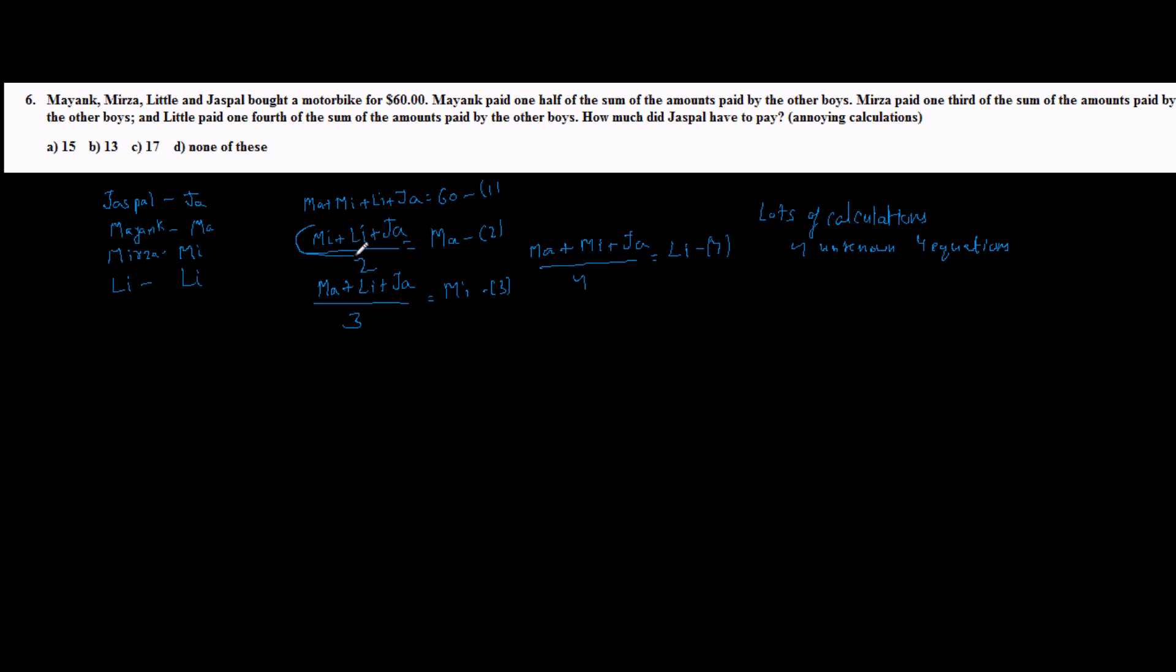So here if you look for a pattern, we find that MI plus LI plus JA is equal to 2MA. So in first equation we can actually replace MI plus LI plus JA by 2MA, and we will get the value of MA. So if I do that, I get MA plus 2MA equal to 60, which gives me MA equal to 60 by 3, or 20.